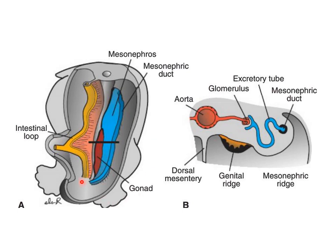The indifferent stage of the gonads shows the gonad appearing as genital ridges on each side in the posterior abdominal wall adjacent to the mesonephros. A transverse section shows the genital ridge, mesonephric ridge, mesonephric duct, excretory tubules of the mesonephric system, and the glomerulus. At this indifferent state, there are no male or female morphological features of the gonads.